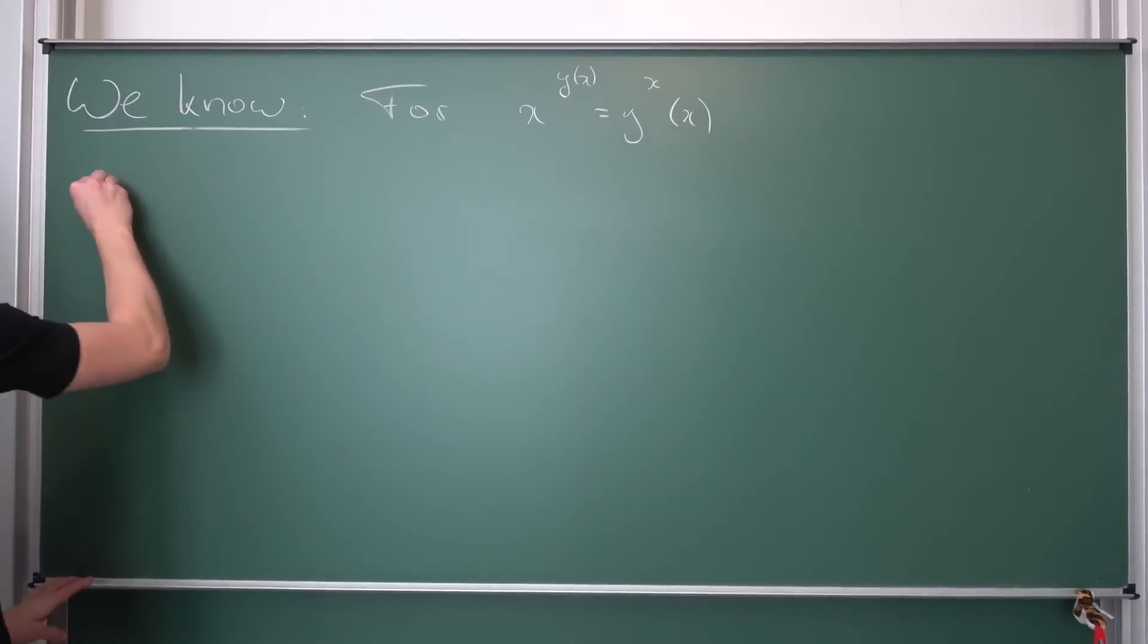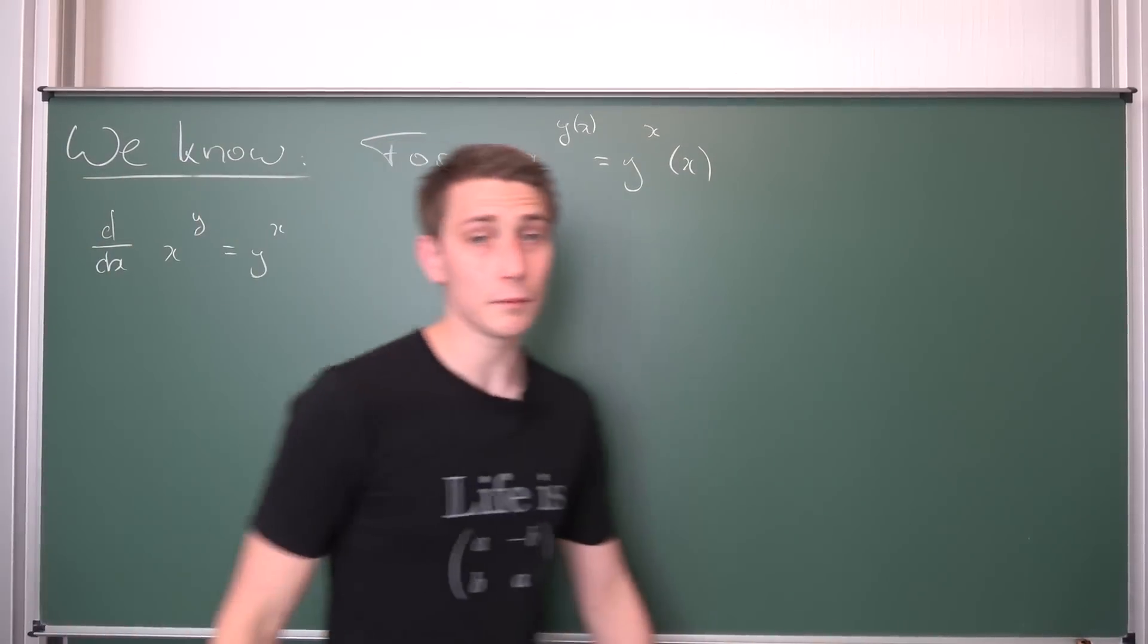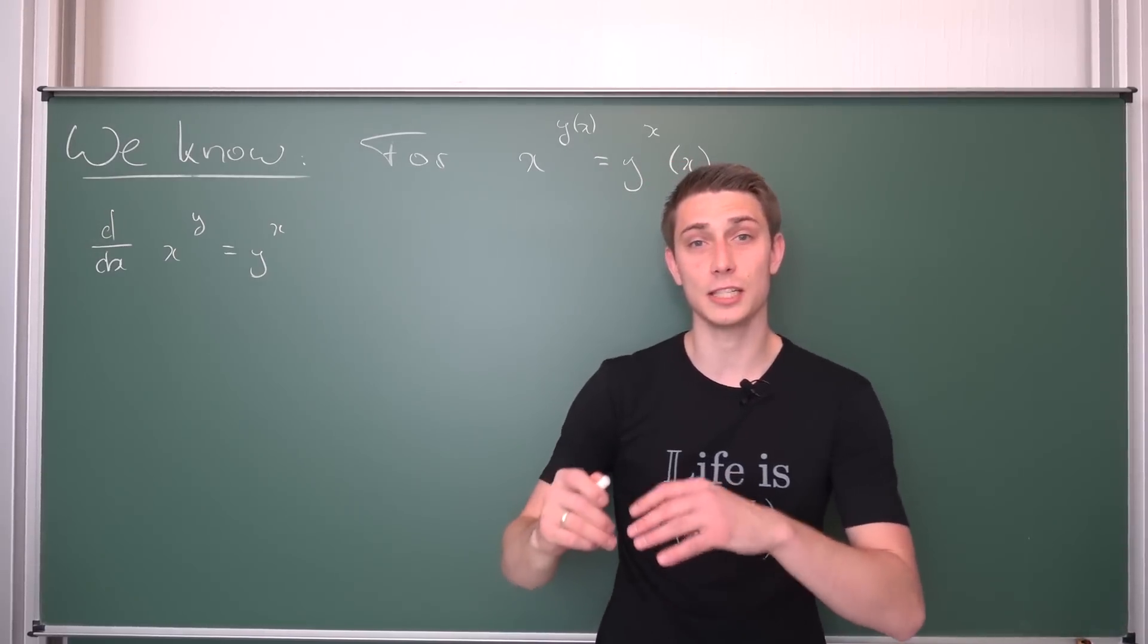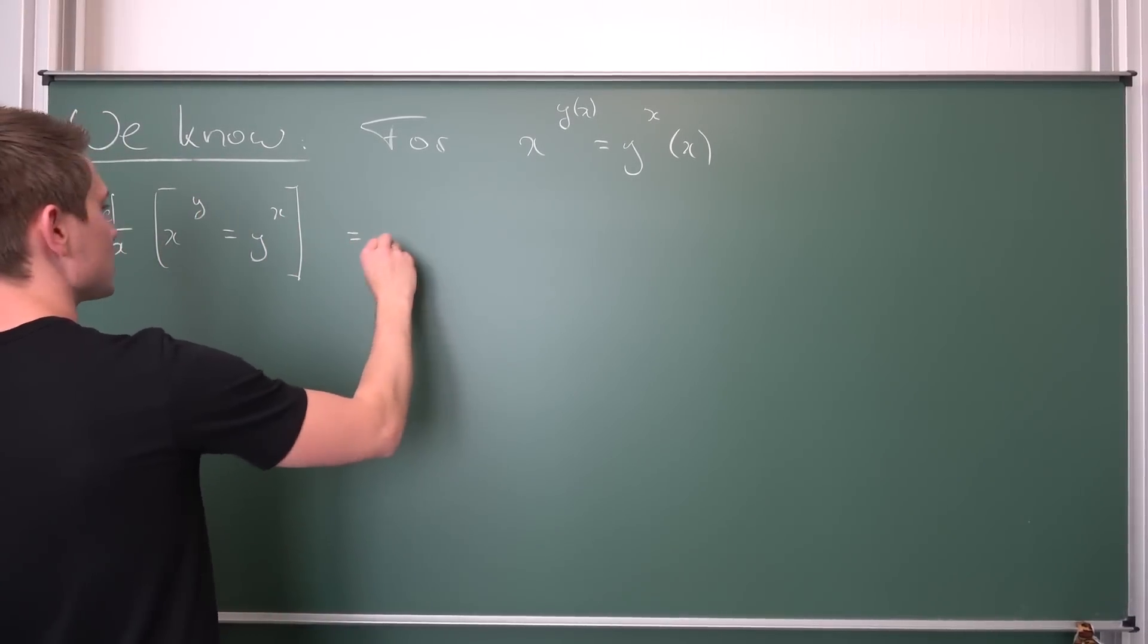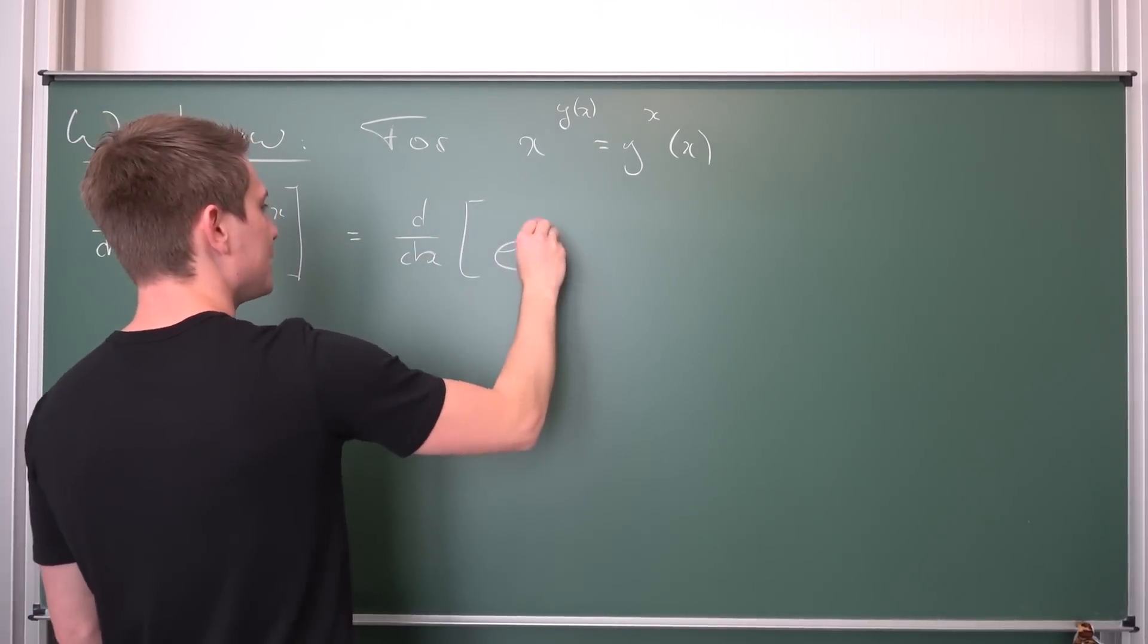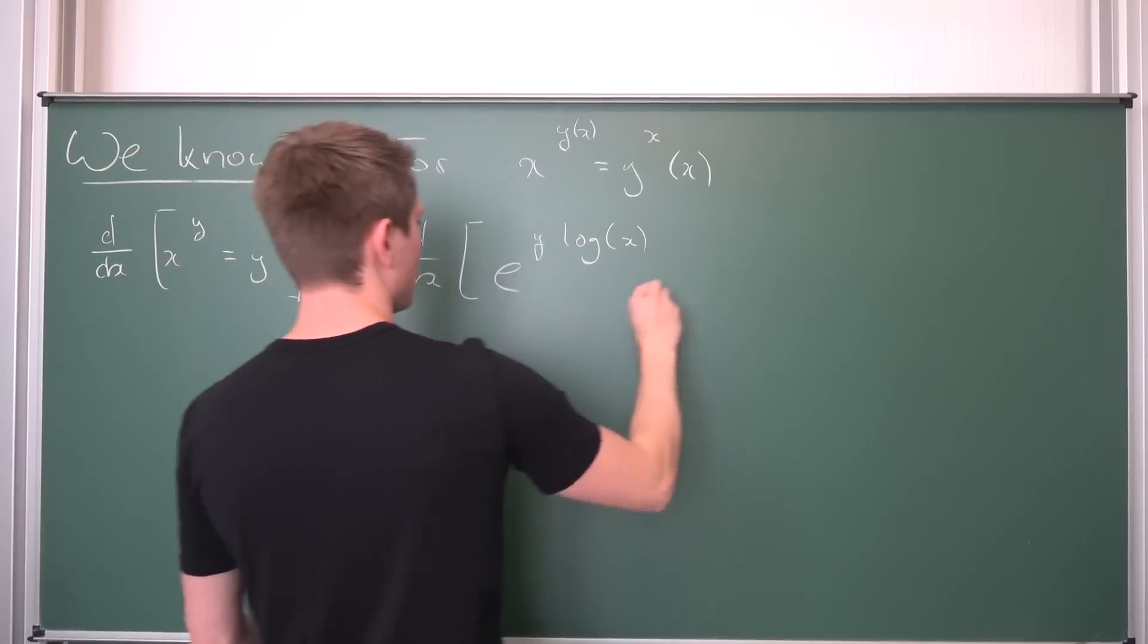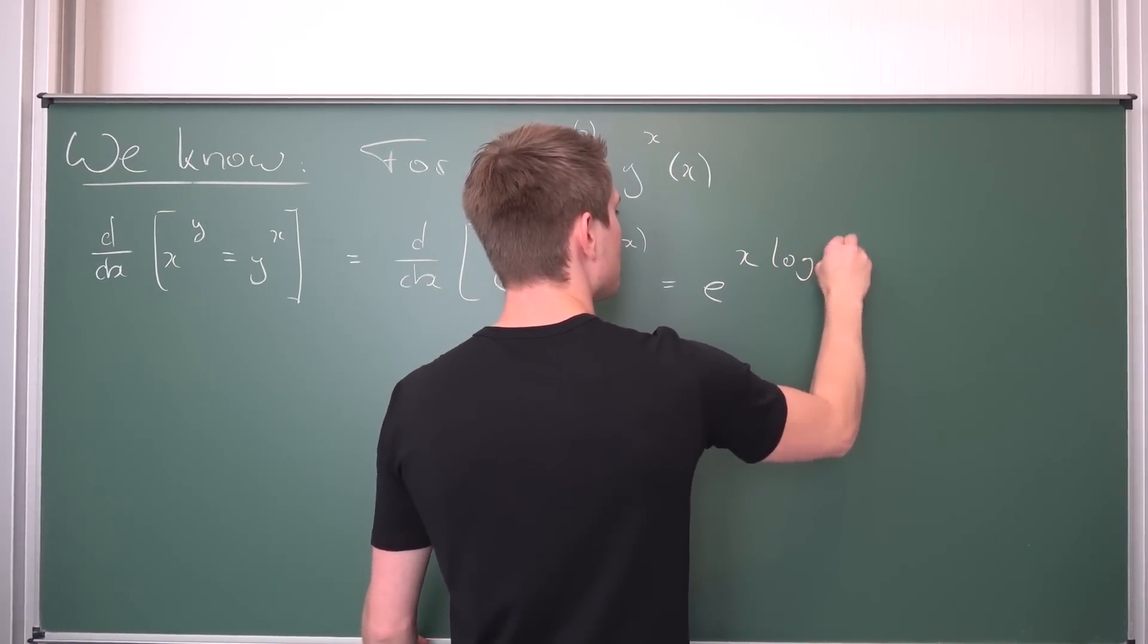We are going to take a look at d/dx of x to the y being equal to y to the x. I would like to rewrite this expression on the left and right hand side using e to the natural log something, because a number a is nothing but e to the natural log of a. So that means we are going to take d/dx of e to the natural log of x to the y. We can make use of natural log property to bring the y to the front, so y times the natural log of x being equal to x times the natural log of y.